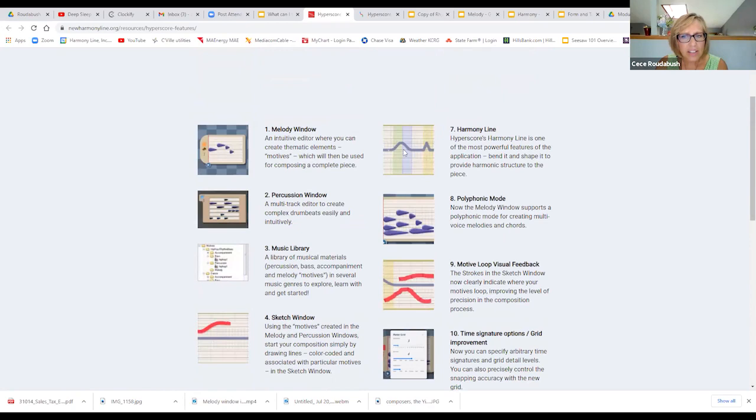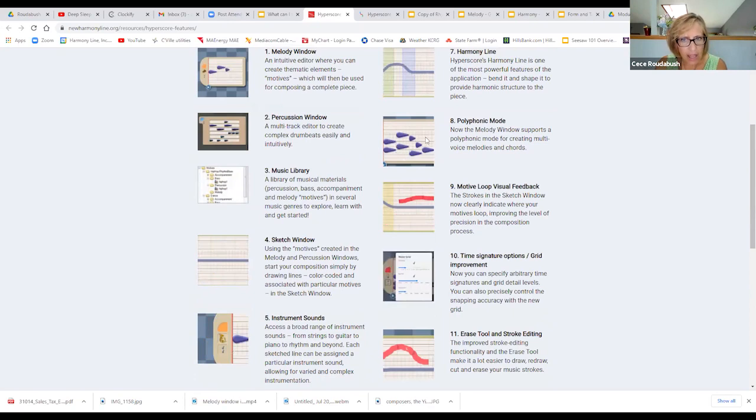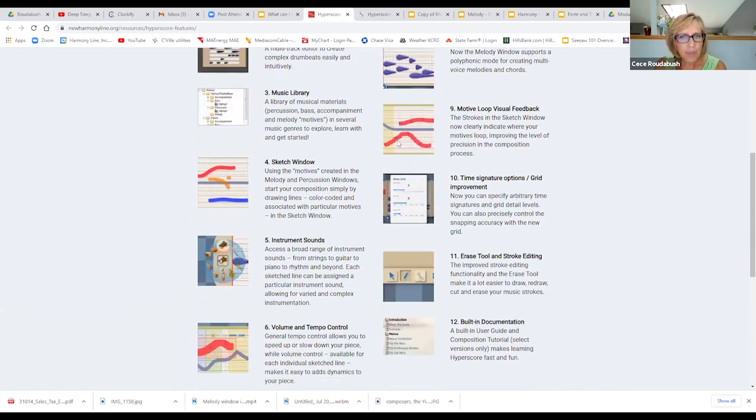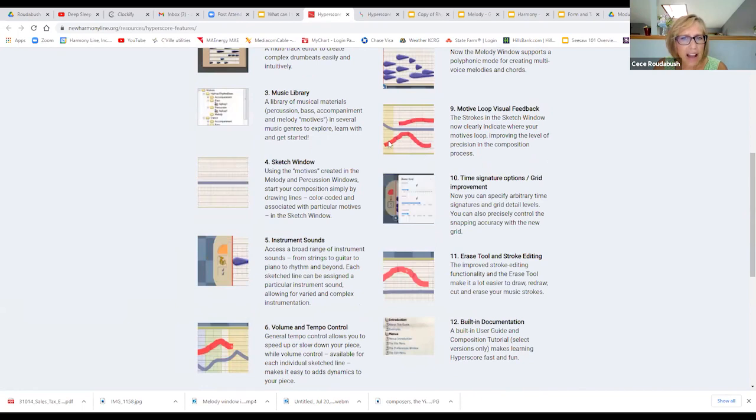We have volume and tempo control, and it looks like just the volume slide that you would see on anybody's screen today. The harmony line can add that tension, suspension, and resolution. And then they have a polyphonic mode. When I'm teaching the younger kids, I want them to do monophonic work, but when I get in the upper grades, I definitely want polyphonic work - having more than one note occur at the same time. The motive loop visual feedback is an awesome feature in the sketch window.